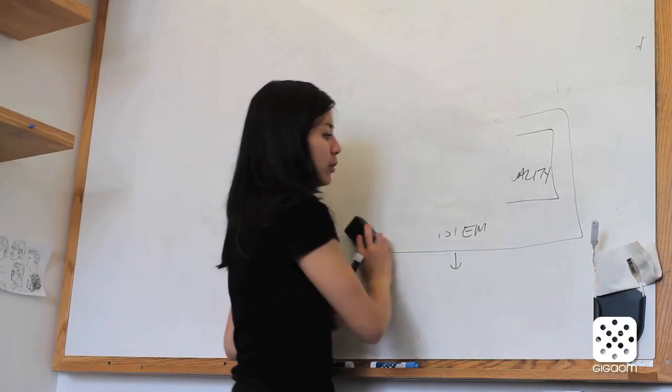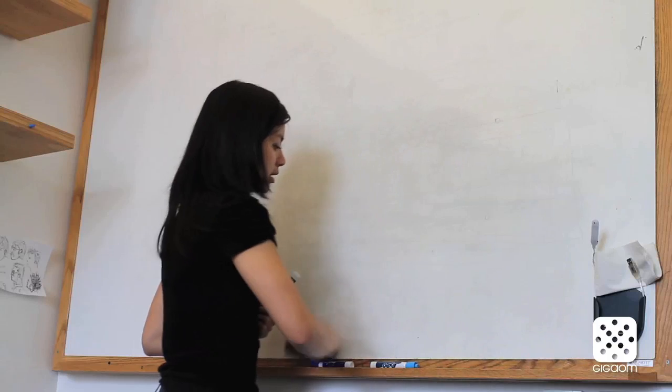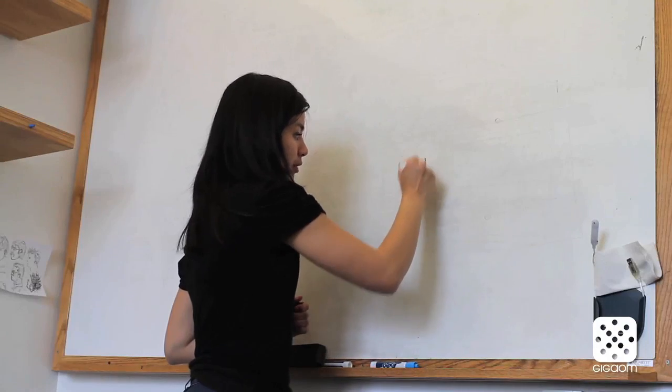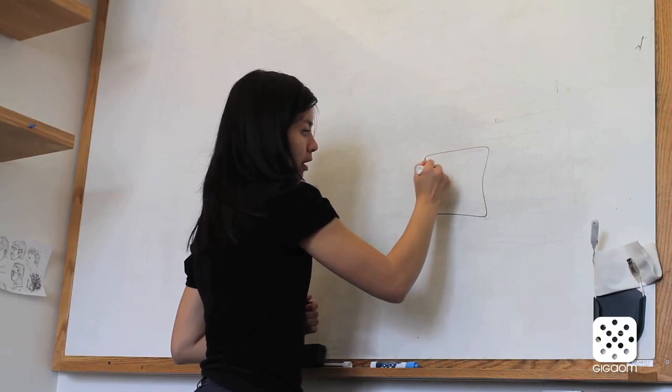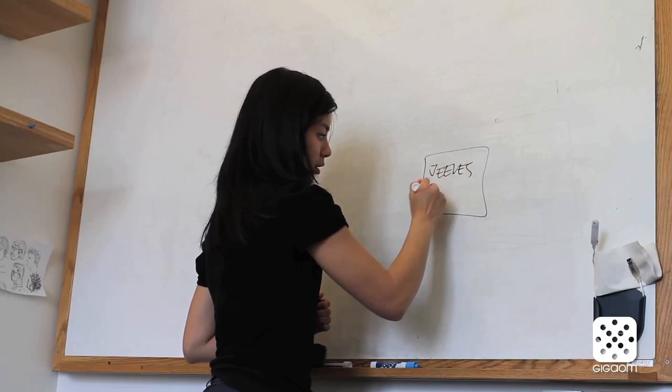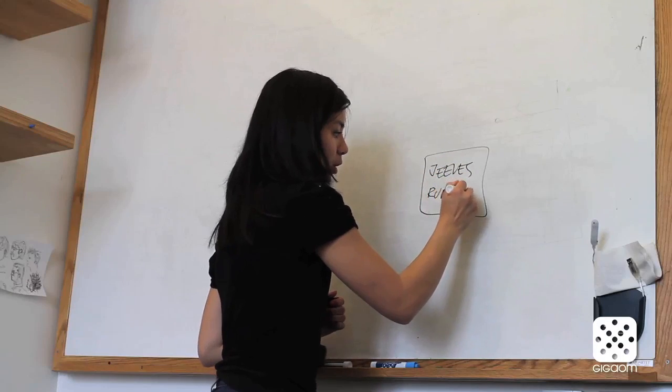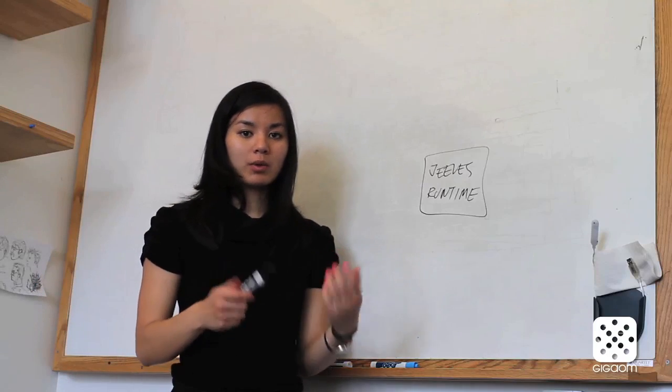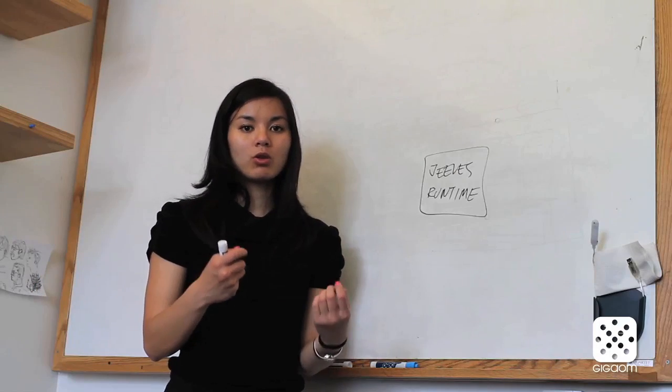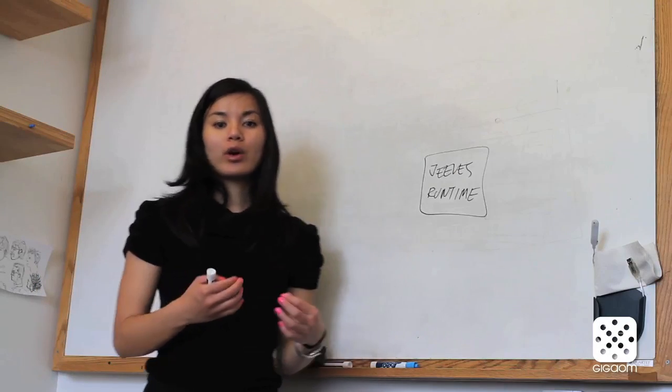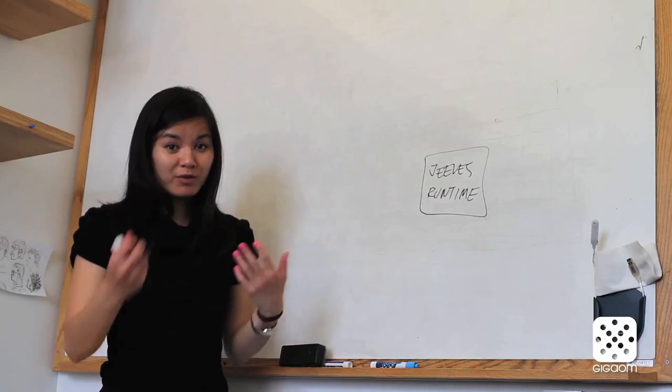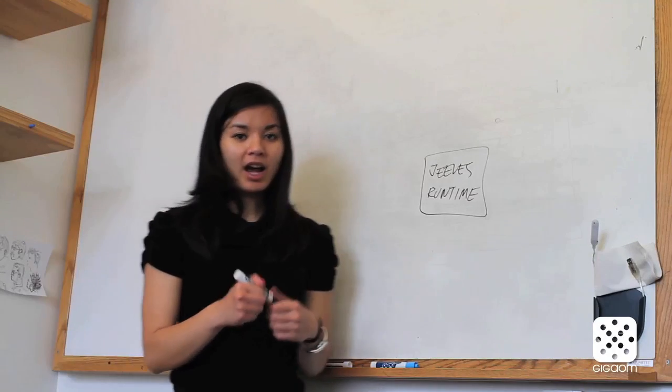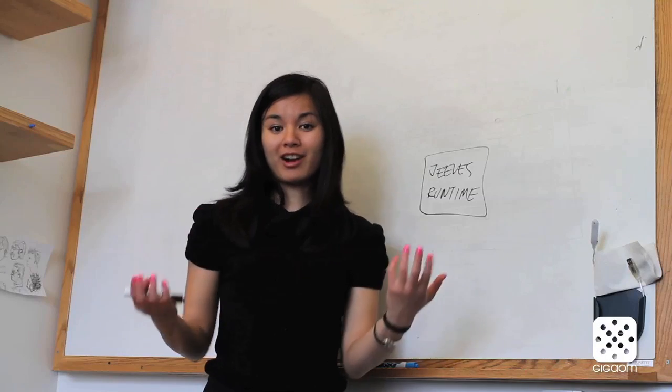And what I have been working on for my PhD thesis is, first of all, defining what the Jeeves runtime should look like. Defining the semantics for how this language works, what does it mean to propagate these policies, what does it mean to show the right output to the right viewer, and how you make this work in practice.